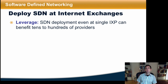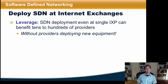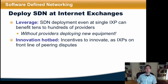When we think about where it might make sense to deploy SDN for inter-domain routing, internet exchanges are a natural place to start. An SDN deployment, even at a single IXP, can benefit tens to hundreds of providers, and this is possible without requiring any of the providers to deploy new equipment. IXPs have tremendous incentive to innovate, as they're currently on the front line of many peering disputes that we're seeing these days.